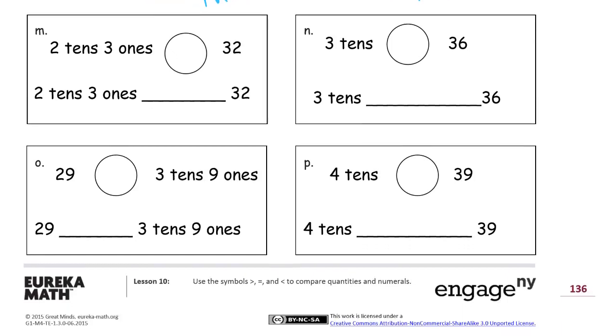Now 2 tens 3 ones. 2 tens and 3 ones. We have a 2 and a 3 and we have a 3 and a 2. So 2 tens 3 ones, if you think about that in a place value box, it's going to make the number 23 and 32. So 32 is going to be bigger than 23. So the alligator eats the bigger number. And 2 tens 3 ones is less than.